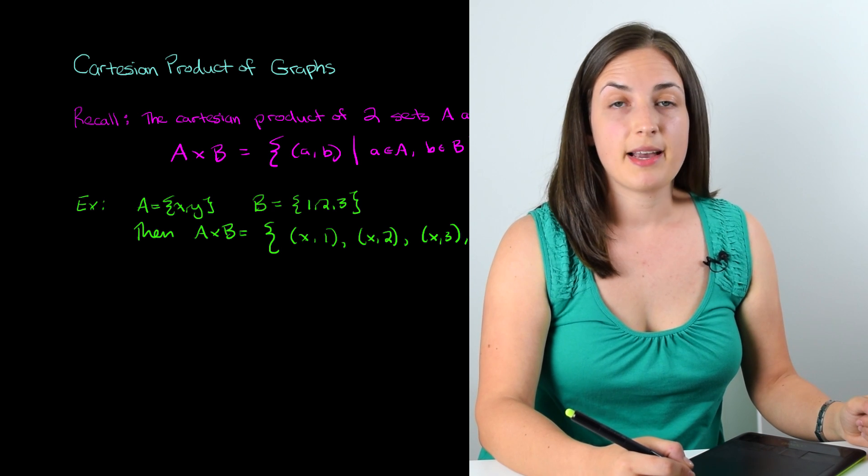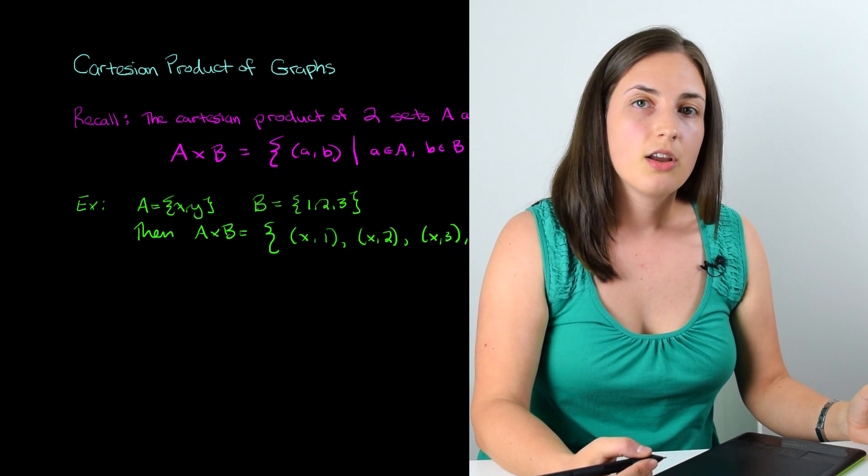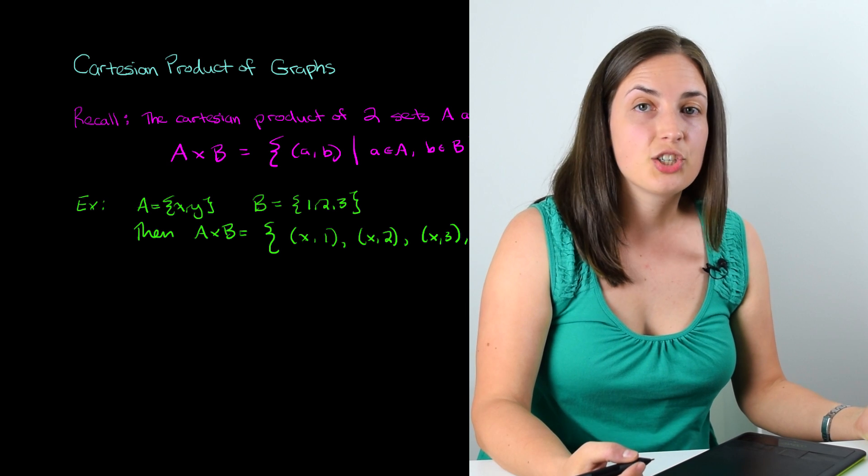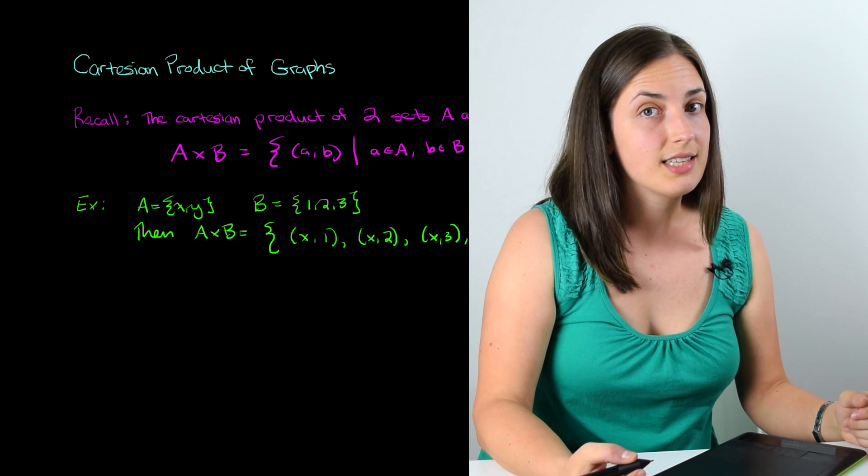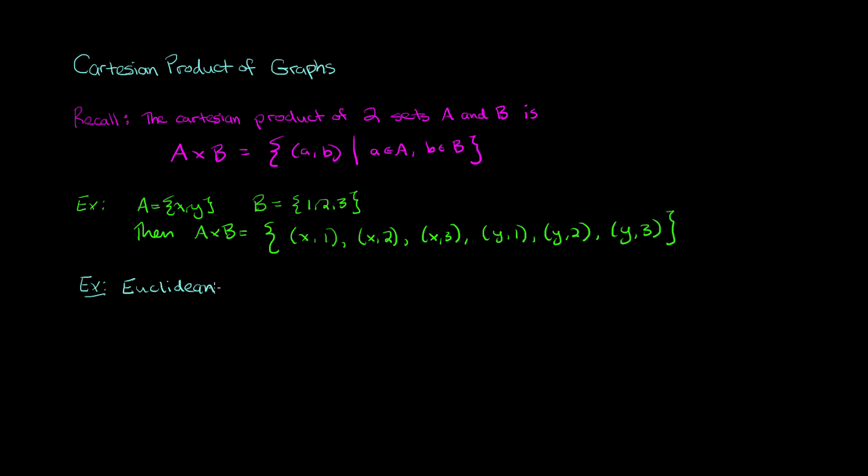Actually, an example that I expect many of you to be familiar with is the Euclidean plane. You may not have thought about it, but the Euclidean plane is indeed the Cartesian product of two sets. Those sets just happen to be the real numbers. The Euclidean plane is just the real numbers Cartesian product with the real numbers. Note that capital R written like this denotes the set of real numbers.